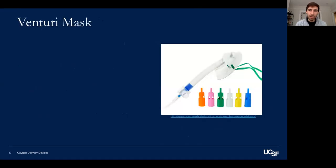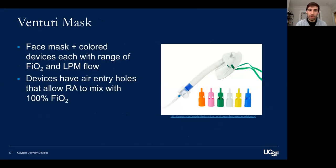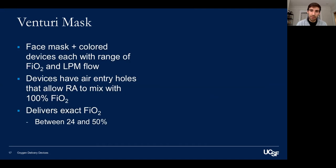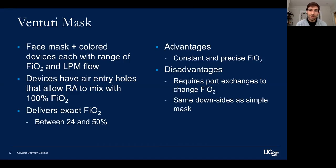The Venturi mask is a fixed performance device — a face mask with different adapters enabling a fixed FiO2 at a specified liters per minute flow. The holes need to remain patent, and respiratory therapy can help with this. It delivers an exact FiO2 between 24 and 50%. Advantages are that it's constant and precise. Disadvantages include the need for port patency and the same downsides as a simple mask regarding anxious patients and aspiration risk.